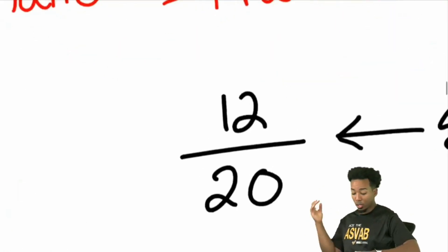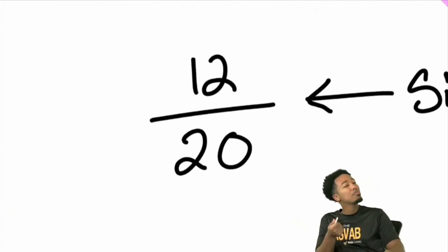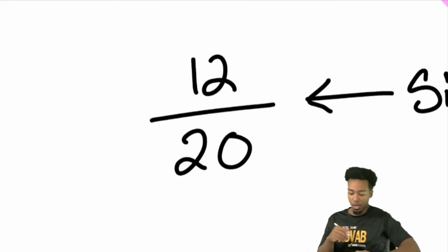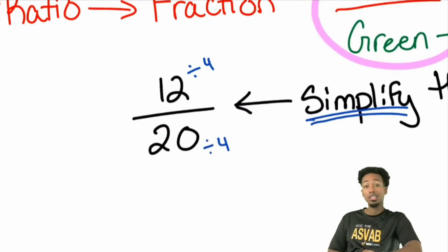If you look at 12 over 20, you can divide them both by two. But that's not the biggest number. You're going to have more work to do if you keep doing small numbers. What's the biggest number that can go into 12 and 20? Four, exactly. So we'll divide the top by four and the bottom by four. That's what simplifying looks like.